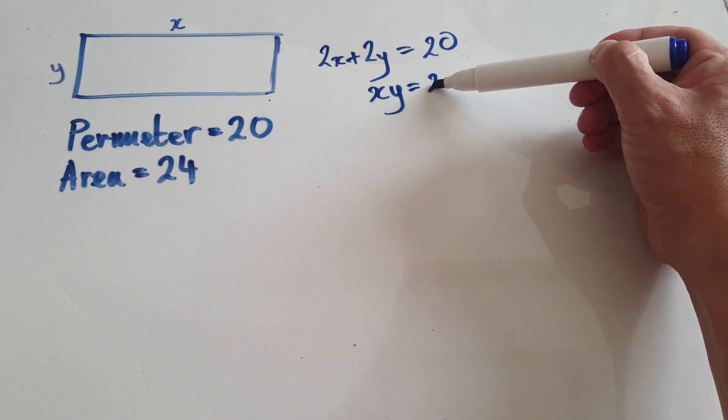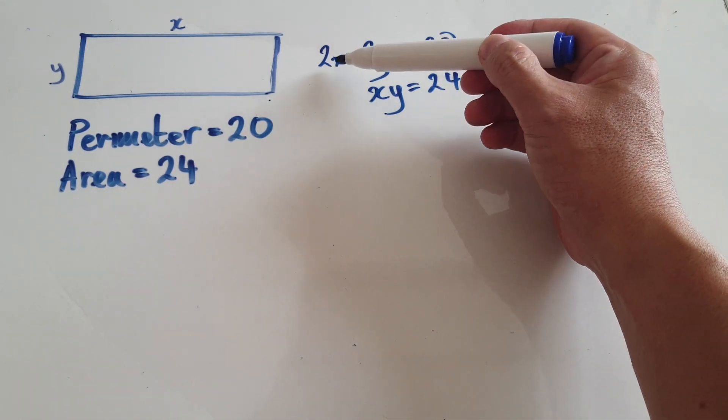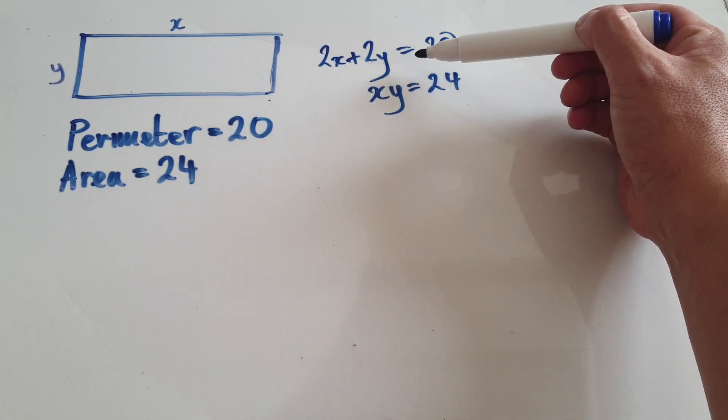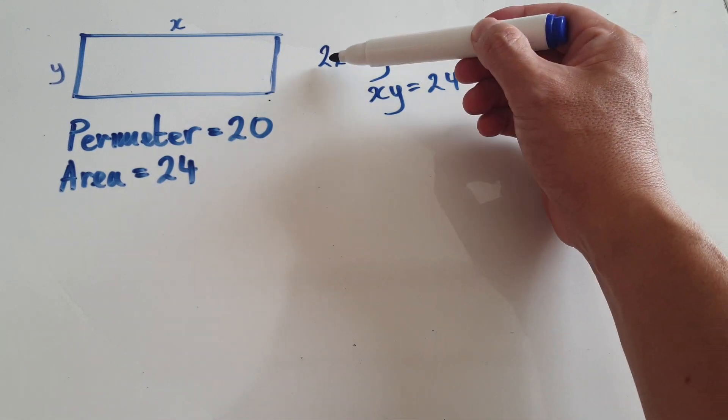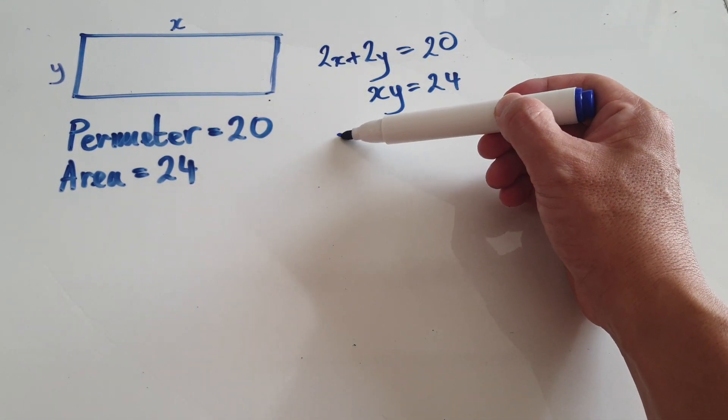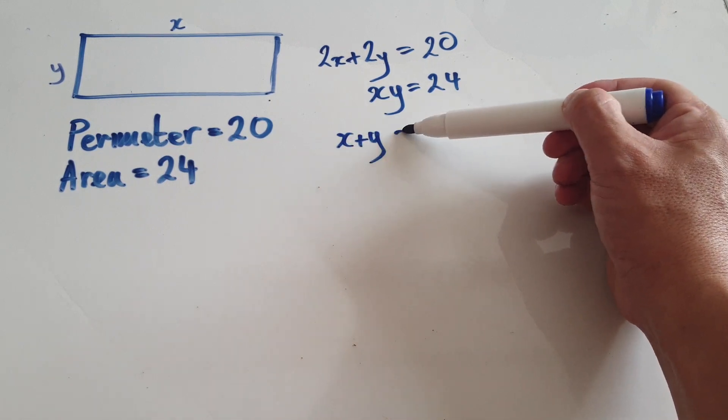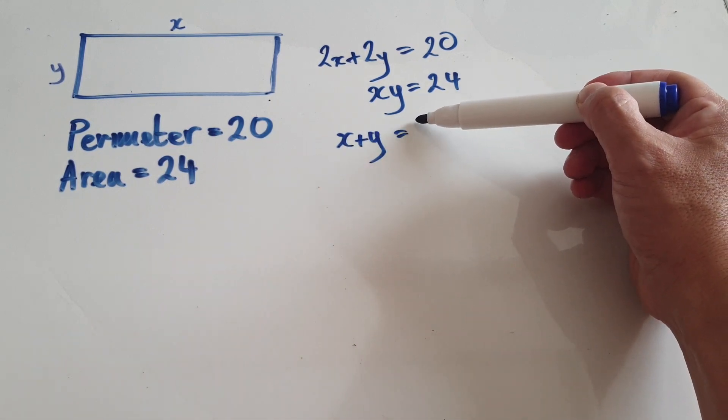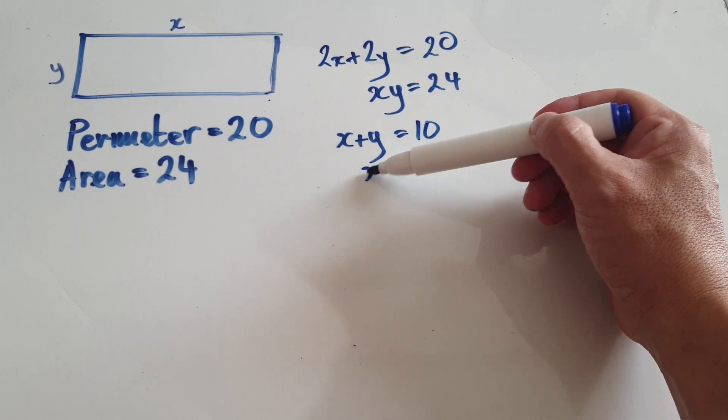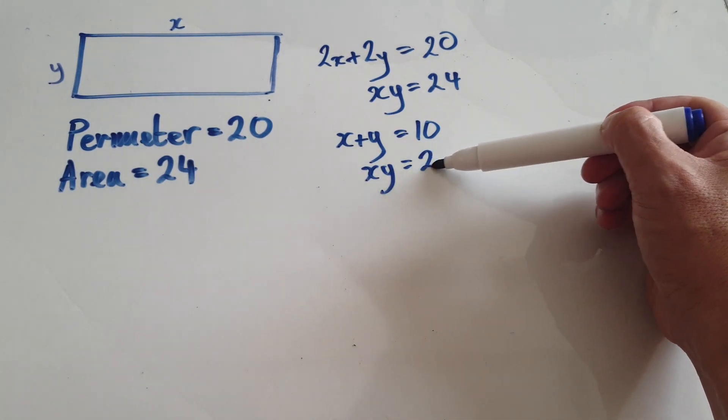The area is x times y, must come up to 24. So we've got to find x and y such that both of these are satisfied at the same time. Let's simplify the first one—let's divide everything by two, so that would be x plus y must come up to 10, and let's leave the second equation alone.